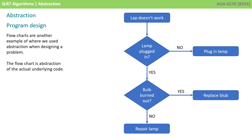When we think about designing the algorithm, we could use a number of techniques, and one of those is flowcharts — a way of representing our algorithm in a visual form. This is an abstraction of the actual underlying code that we're going to have to eventually write.